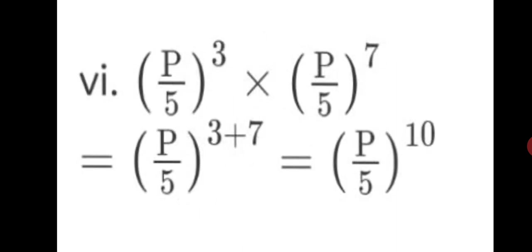Last sum: P upon 5, raised to the power of 3, into P upon 5, raised to the power of 7. Take the base P upon 5 as common — it remains the same. Add the index: 3 plus 7 is 10. Final answer: P upon 5, in bracket, raised to the power of 10. This way we have completed 6 sums on multiplication of indices with the same base and completed Practice Set 27. Hope you have understood these sums well. Do practice them for better understanding. Stay safe. Keep learning.